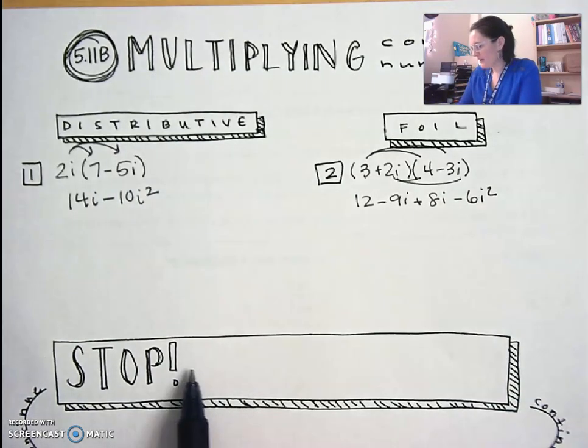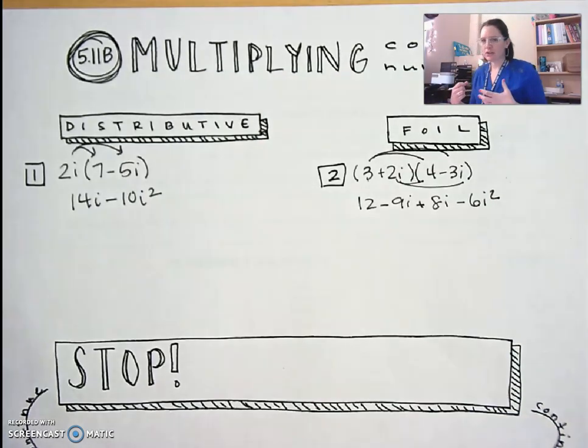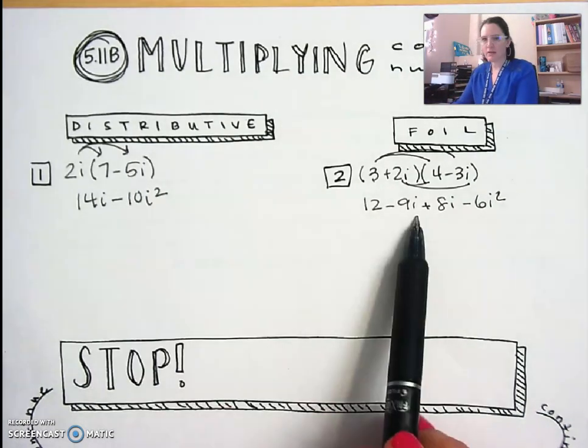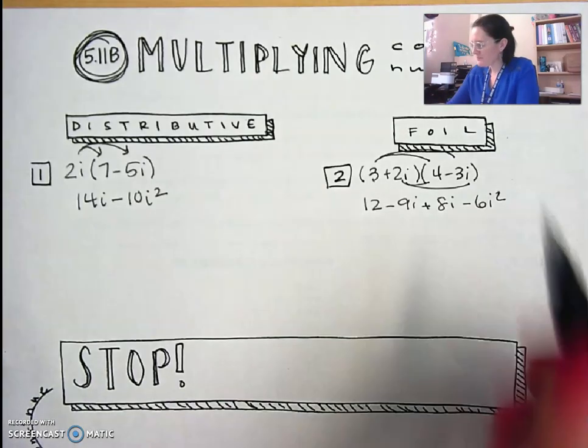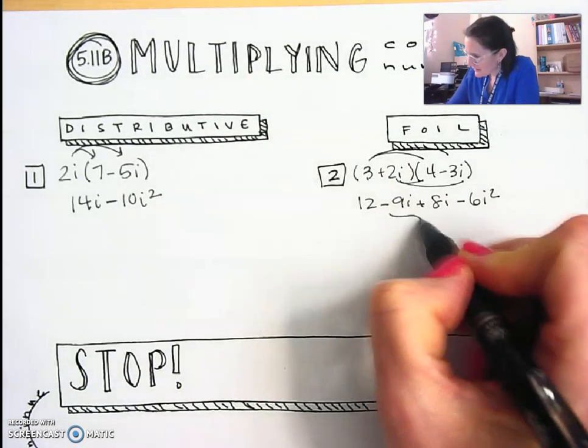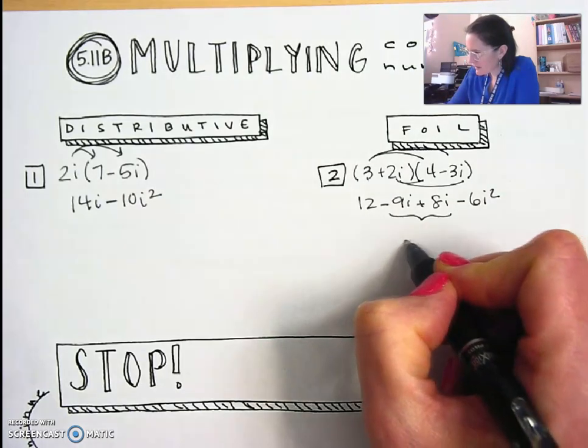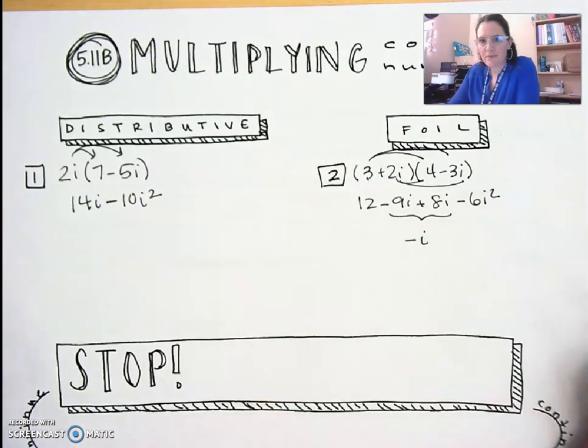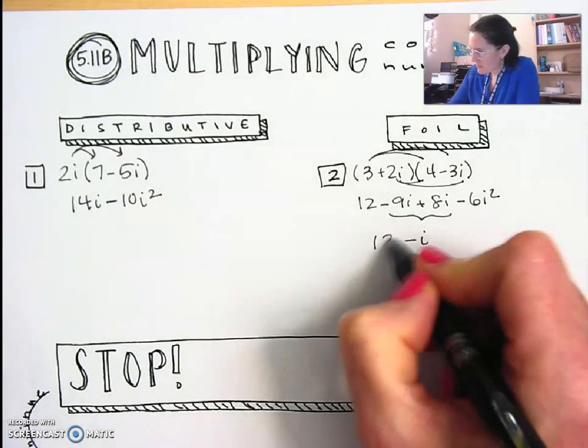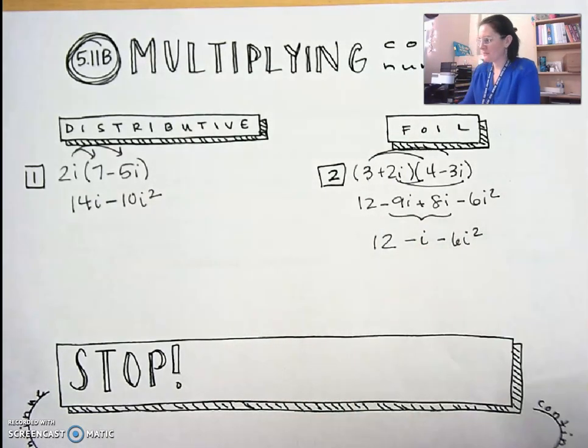Now what I want you to write in this stop box is something we're going to use to continue the math. Oh wait, sorry, hold on. We can combine these right here. Negative 9i positive 8i is a negative 1i or just negative i. And then we have the 12 from up front and the minus 6i squared here.